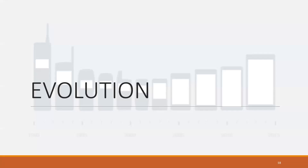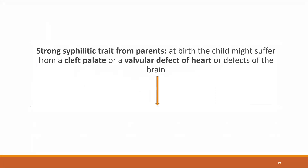Coming to the evolution of the Baryta. It starts with a strong syphilitic trait from the parents. At birth, the child might suffer from a cleft palate, a valvular defect of the heart, or defects of the brain.